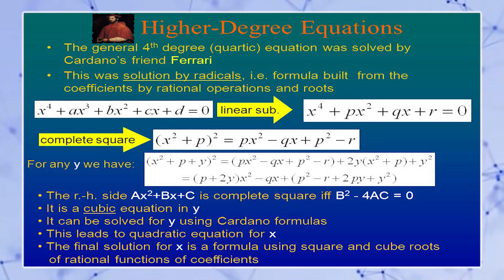In Ars Magna, Cardano also included a solution of quartic equation, which was found by his friend Ferrari.